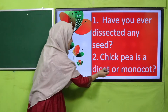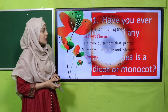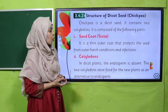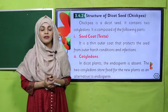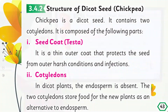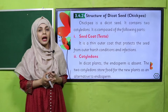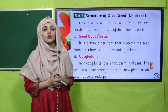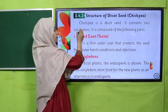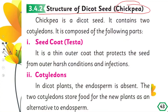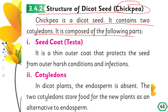Please open page number 43 in your Science 5 books. Let's start the lecture. Structure of dicot seed — chickpea. Chickpea is a dicot seed. It contains two cotyledons and is composed of the following parts.